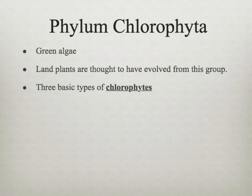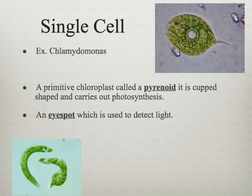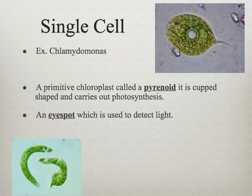Let's start with our first phylum: Chlorophyta. This is where we're going to find our green algae. Land plants are thought to have evolved from this group, so land plants' closest ancestor would be in phylum Chlorophyta. There are three basic types of chlorophytes. The first group is the single-cell organisms, and the example I'm going to use is Chlamydomonas.